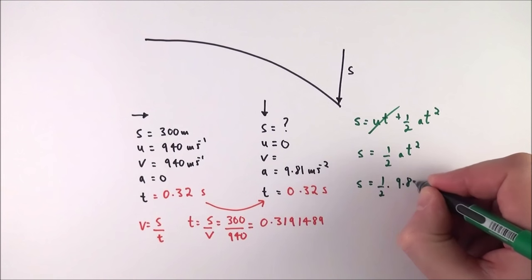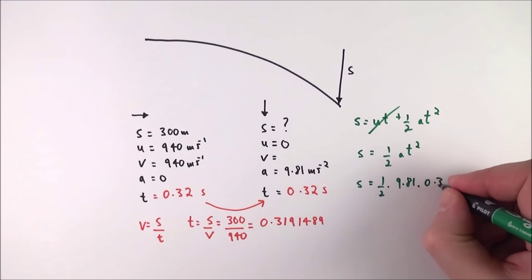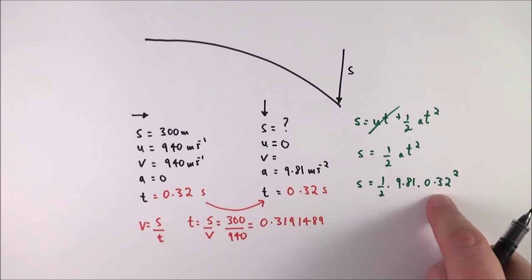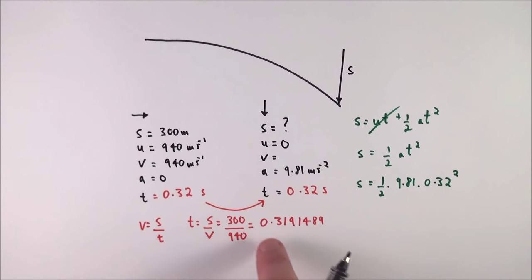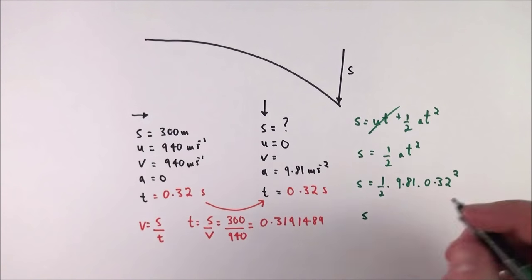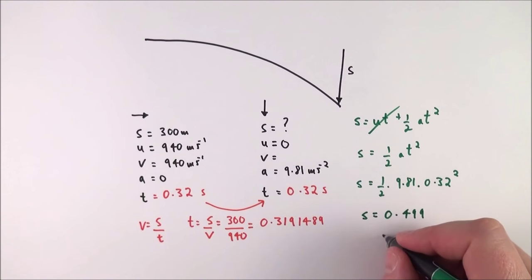I can put my numbers in and say that the displacement in the vertical direction is equal to a half times 9.81 multiplied by T squared which is 0.32 squared. When I do the calculation I'm going to use the number that I've got in my calculator, and when I do that I find that the vertical displacement is equal to 0.499, which is effectively equal to 0.50 of a meter.